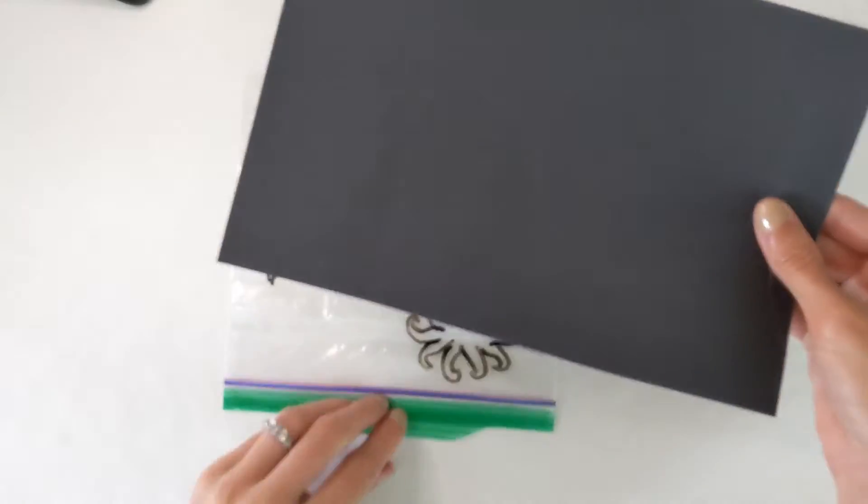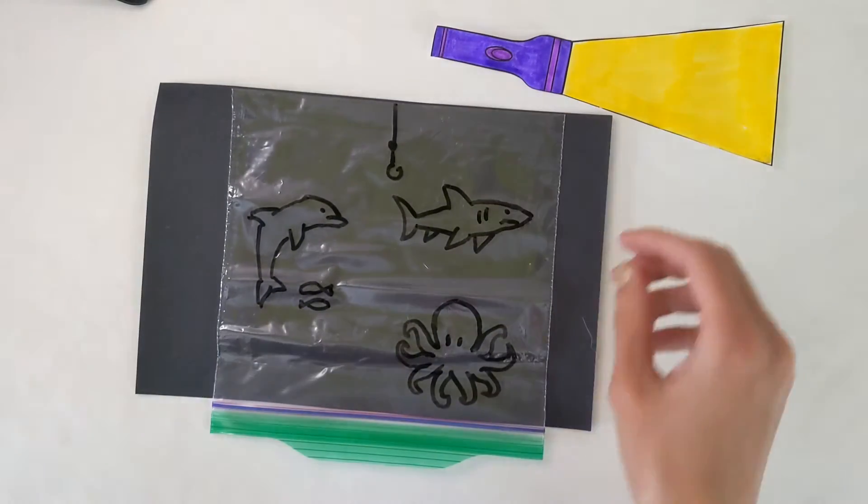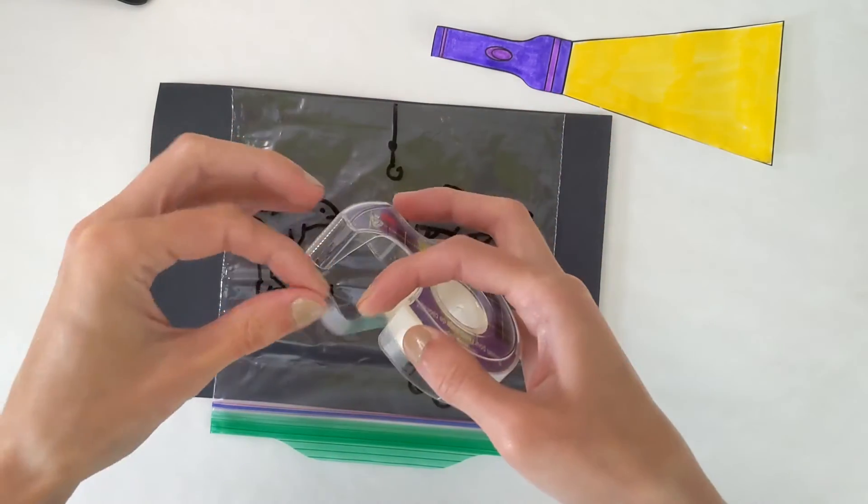For step three, place your plastic bag over top of the black piece of paper and tape it in place at the top.